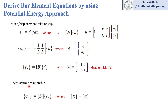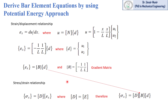We have the stress-strain relationship: sigma x equals D times epsilon x in matrix form, where the D matrix equals E (Young's modulus of elasticity). We now have the equation for sigma x because we have replaced epsilon x with the B matrix and d matrix. Therefore, sigma x can be written as D times B times small d matrices.